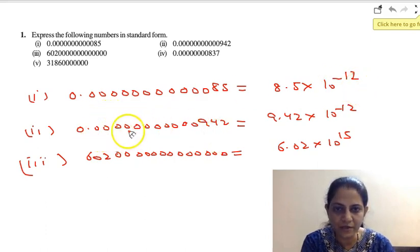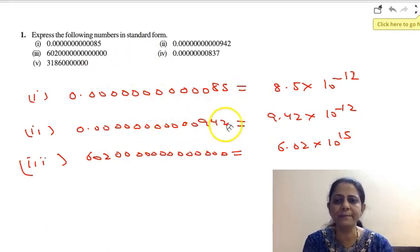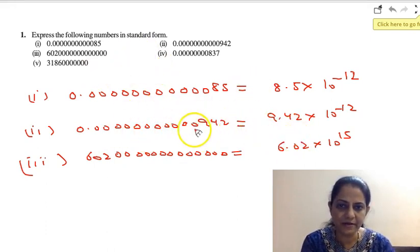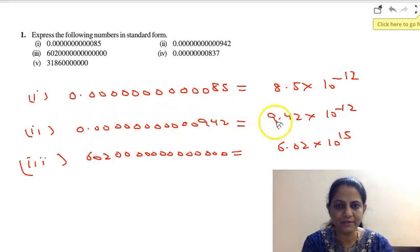Now here also, there are 11 zeros. Second part: I want to write it in standard form as 9.42. So we have to write with base 10, it will be 9.42 × 10^-12. Because we are shifting the decimal to the left hand side, I will write the power as negative.